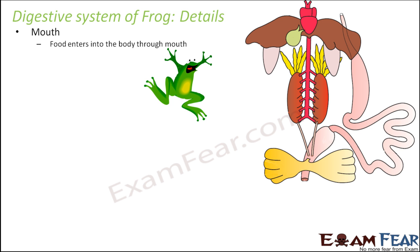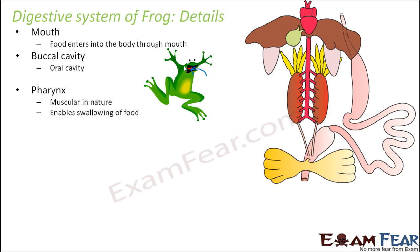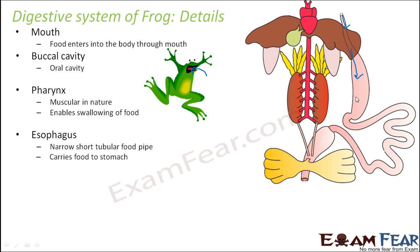Food enters the body through the mouth and passes into the oral cavity — the entire space inside the mouth where we have teeth and tongue, also known as the buccal cavity. From there, food moves into the pharynx, a short muscular structure that enables swallowing by secreting mucus-like substances that make the food soft and help it slip inside. The food then gets into the esophagus, which carries it to the stomach.